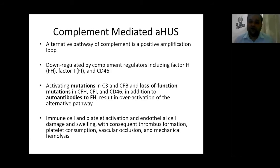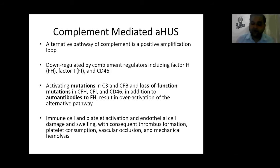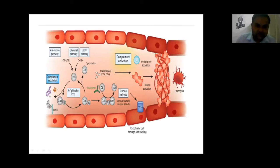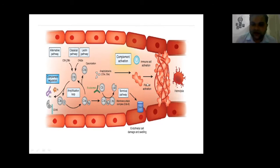In complement-mediated hemolytic uremic syndrome, there is downregulation of factor H, factor I, and CD46. Activating mutations in C3 and CFB, and loss-of-function mutations of factor H, factor I, and CD46, in addition to autoantibodies against FH, result in over-activation of the alternative pathway. There is immune cell and platelet activation, endothelial cell damage and swelling with consequent thrombus formation, excessive platelet consumption, vascular occlusion, and mechanical hemolysis. The amplification loop continuously takes place, forming C3B that activates C5 into the terminal pathway, causing the membrane attack complex C5B-9. C3a and C5a are the anaphylatoxins causing immune cell activation, complement activation, platelet activation, and microthrombi-fibrinous transformation, causing mechanical damage to RBCs.